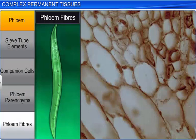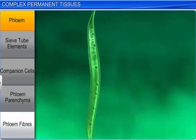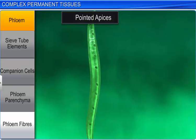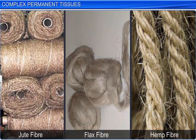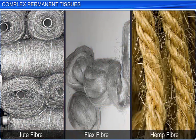Phloem fibers, or bast fibers, are made up of sclerenchymatous cells found in secondary phloem. They are elongated, unbranched with pointed apices, and their cell walls are quite thick. On maturity, phloem fibers lose their protoplasm and become dead. Jute, flax, and hemp are some examples of commercially used phloem fibers.